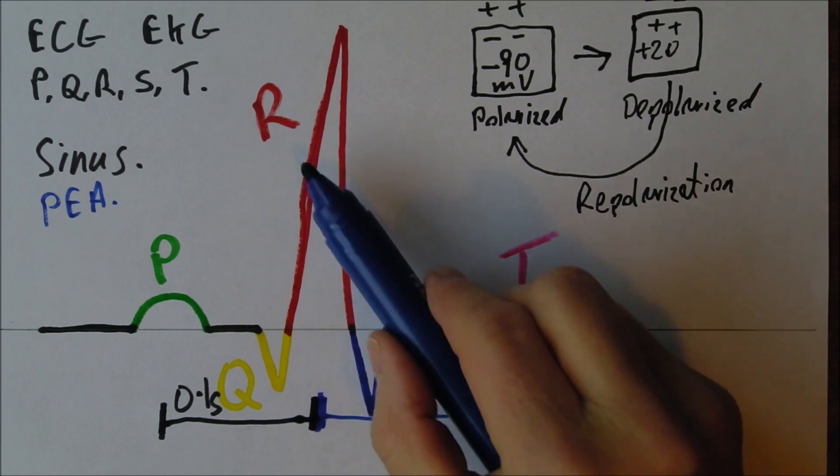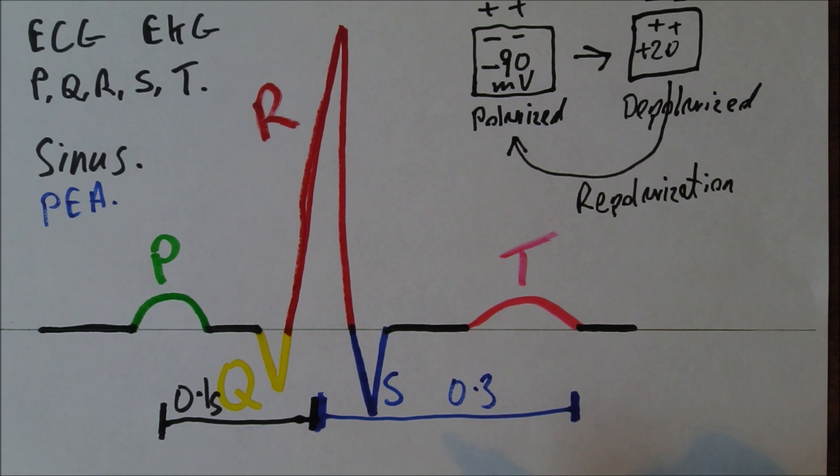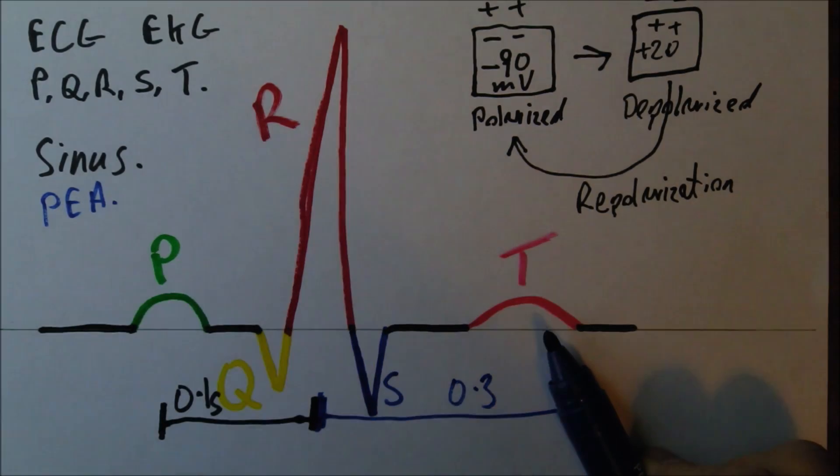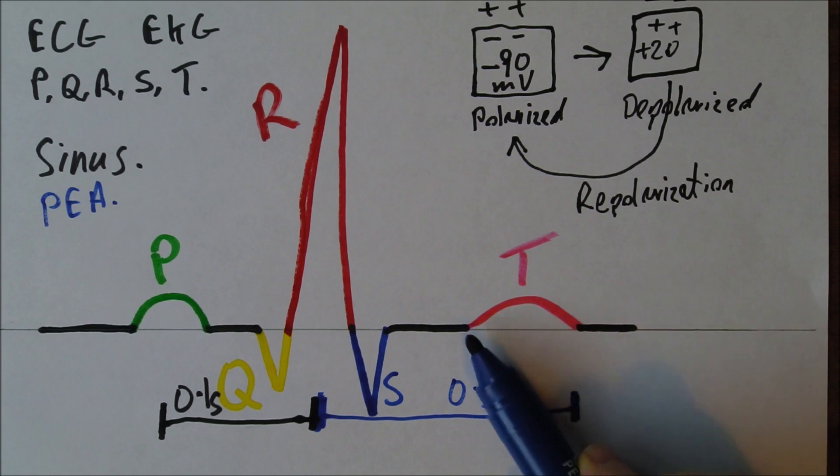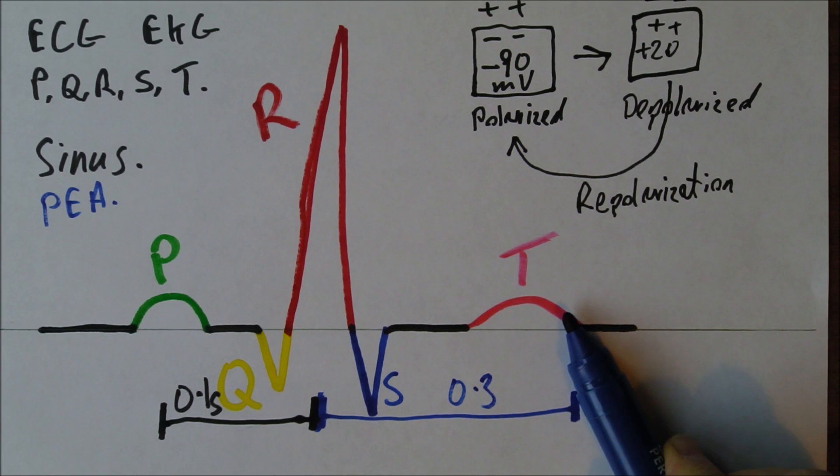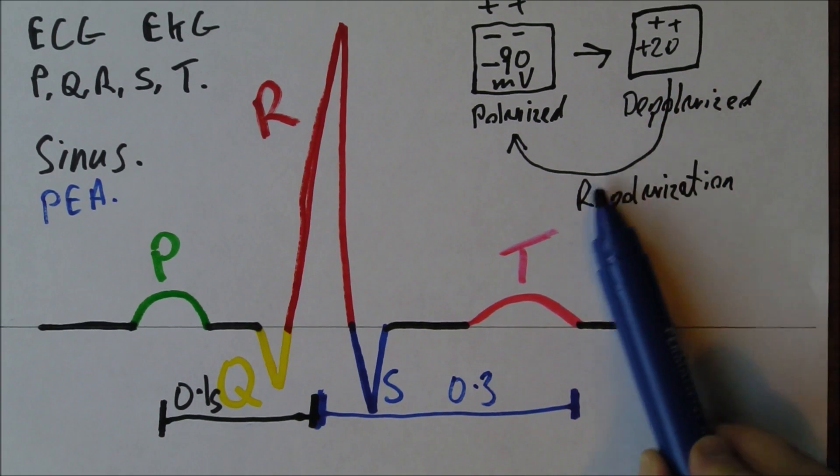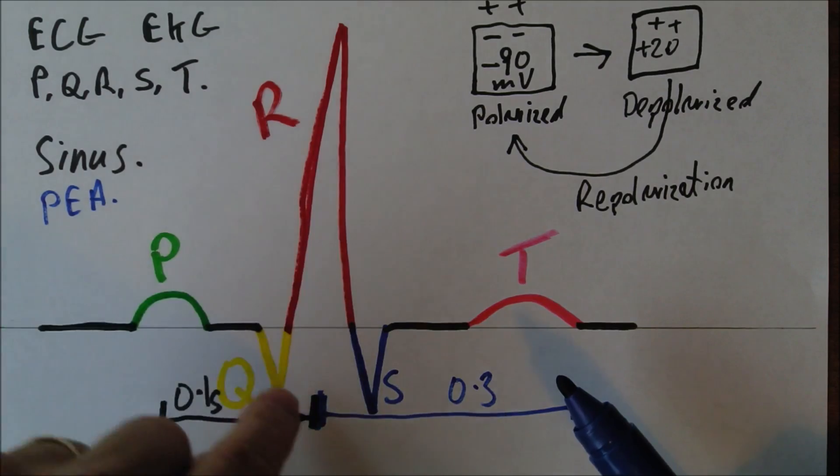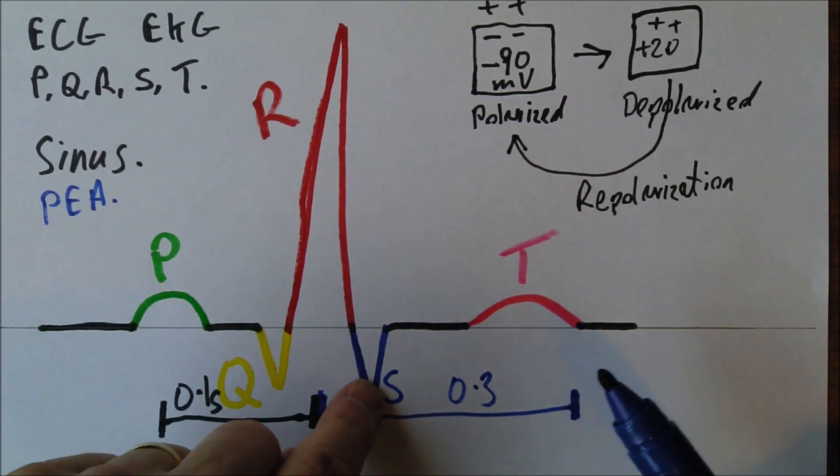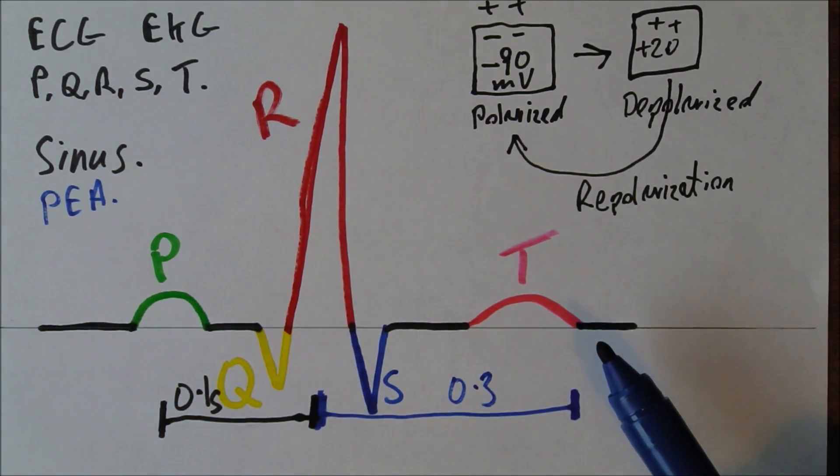Apart from that, P is atrial, QRS is ventricular, and T is repolarization of the ventricle. Now, we've said that the T is the repolarization of the ventricle, the ventricular myocardium, which we see here, the repolarization. So, P is depolarization, QRS is depolarization, T is the only one that's repolarization.